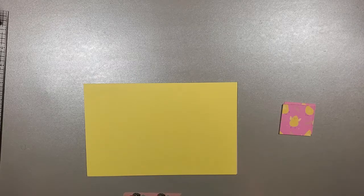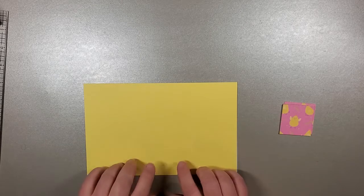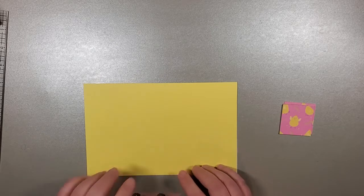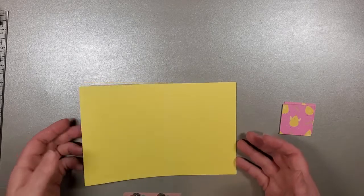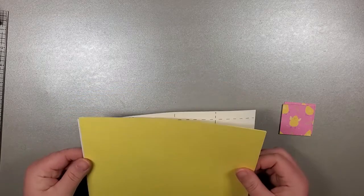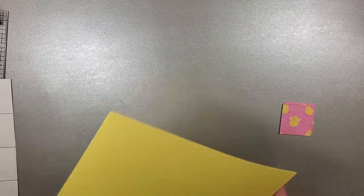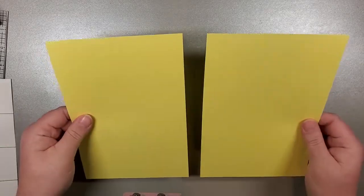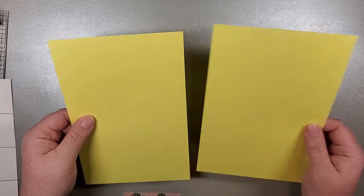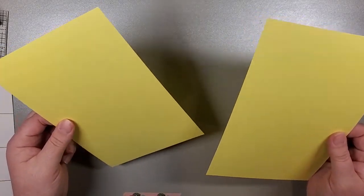So this is it. We're using some very bright yellow cardstock. All I've done is I've taken an eight and a half by eleven and I've cut it in half. So each of these pieces is five and a half by eight and a half.